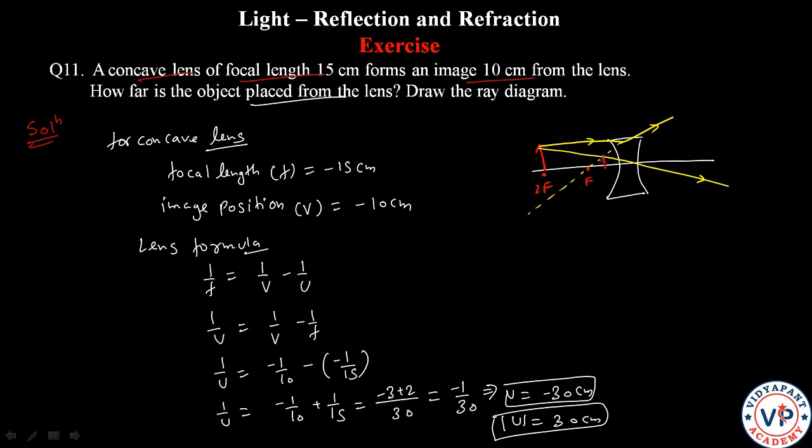This is the image. The image distance is 10 cm, and the object distance from the pole is 30 cm.